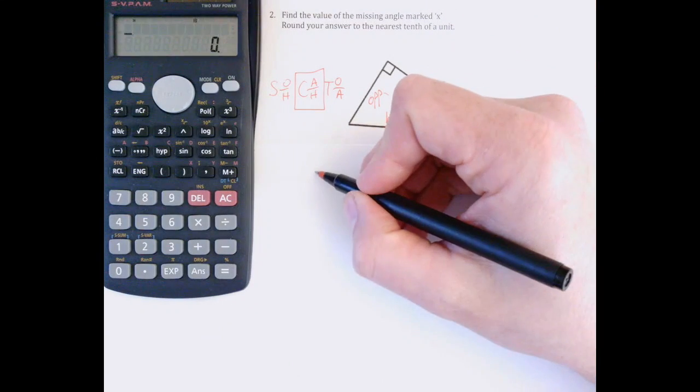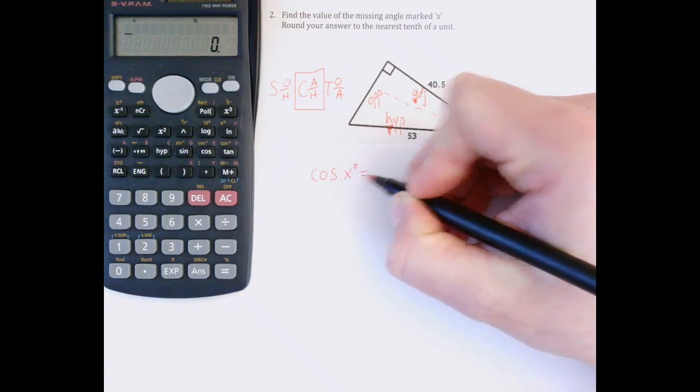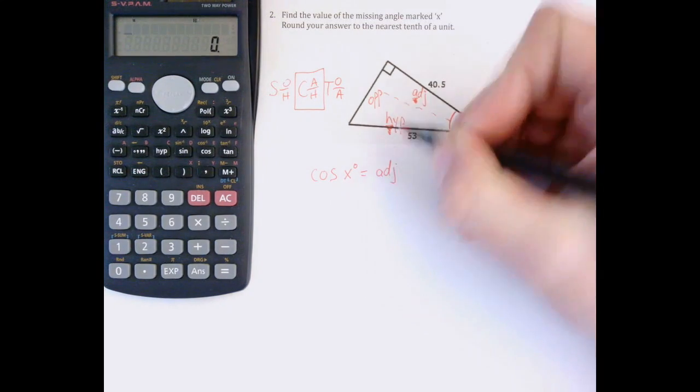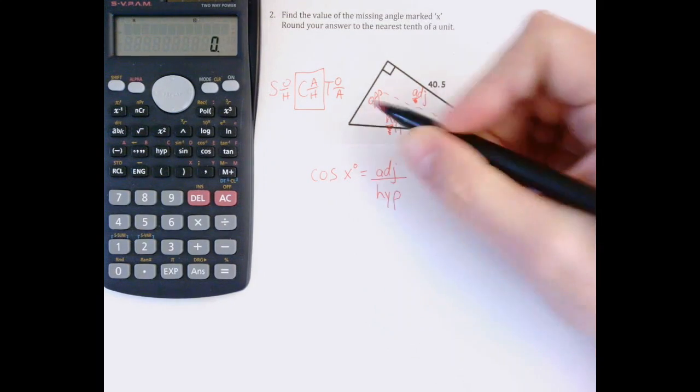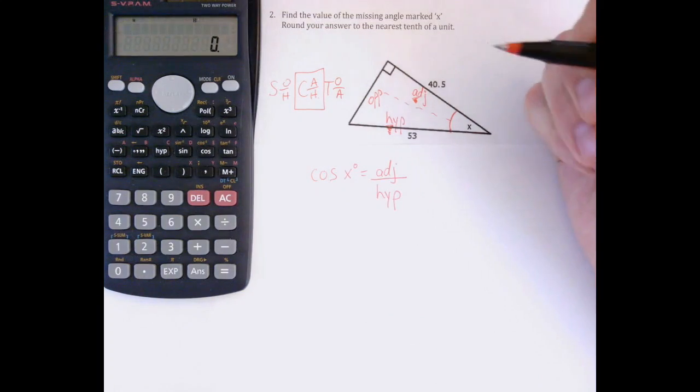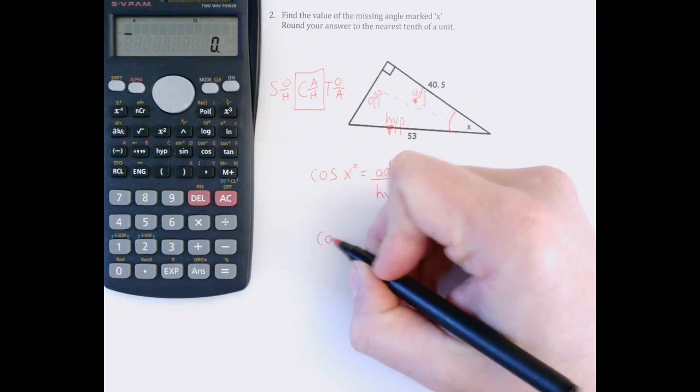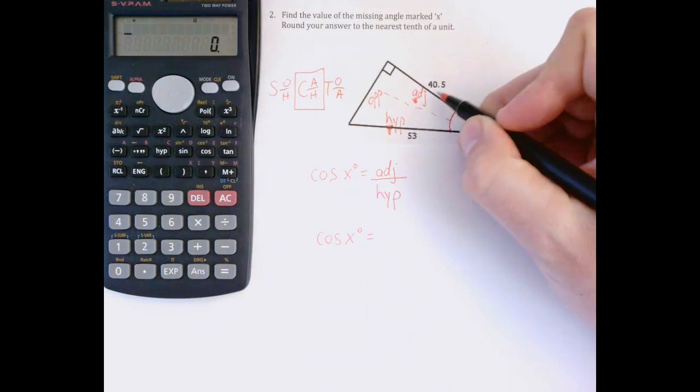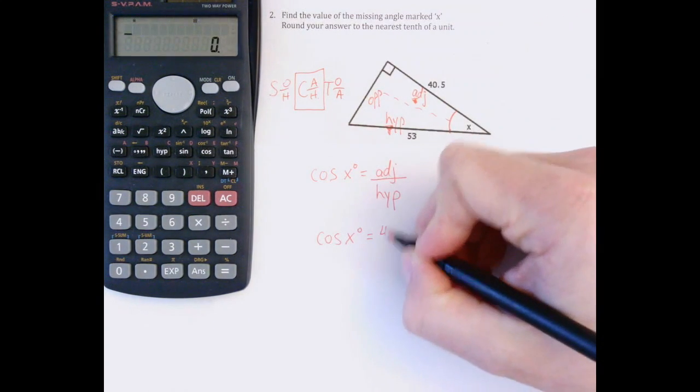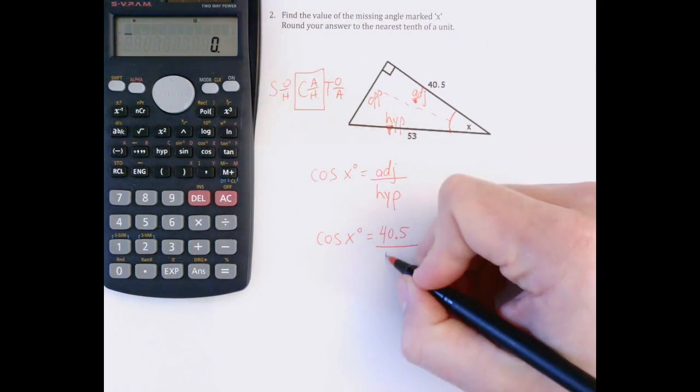I'm going to write out the formula properly: the cosine or cos of x degrees equals adjacent, that's the A up here, divided by hypotenuse, that's the H. The angle is what I'm trying to solve for, so I'll leave that as X. So cos of the unknown angle equals adjacent, which in this question is 40.5, divided by hypotenuse, which is 53.